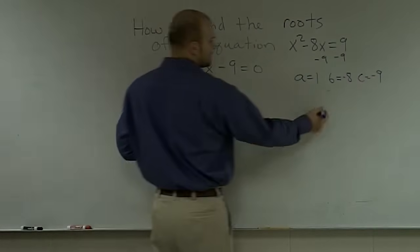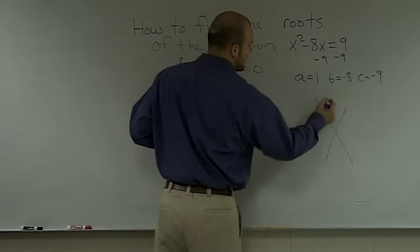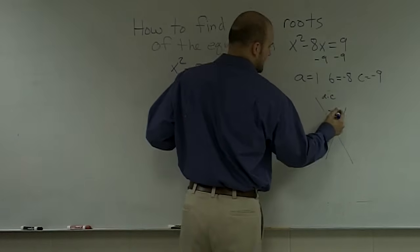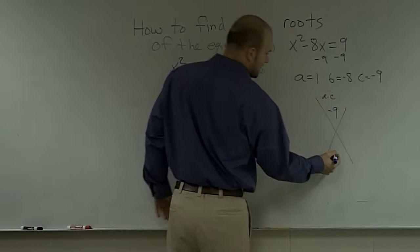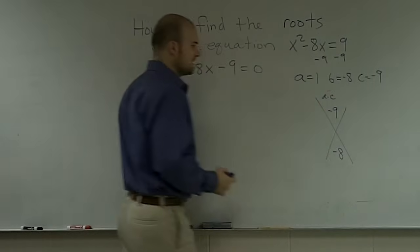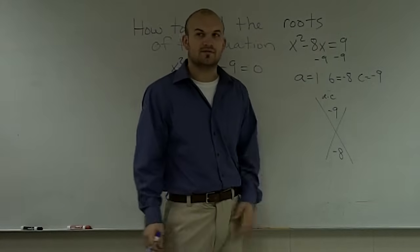So then, now I can simply go ahead and do my a times c. a times c becomes negative 9, and my b is negative 8. So I say, what two numbers multiply to give me negative 9 but add to give me negative 8?